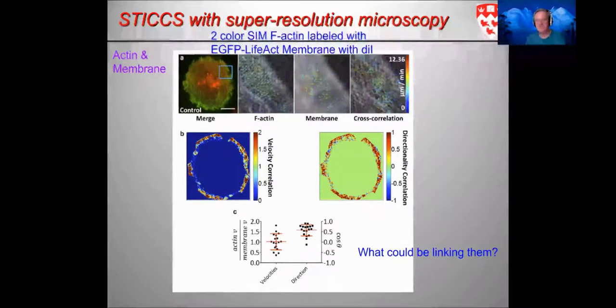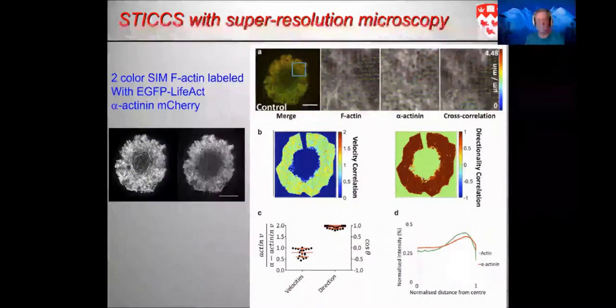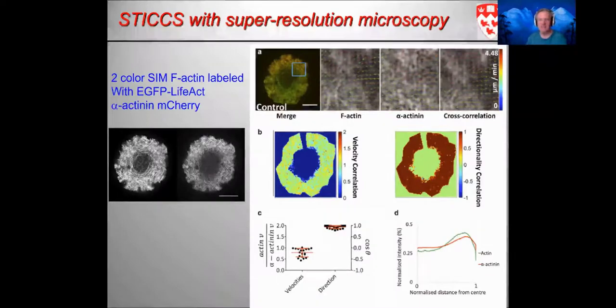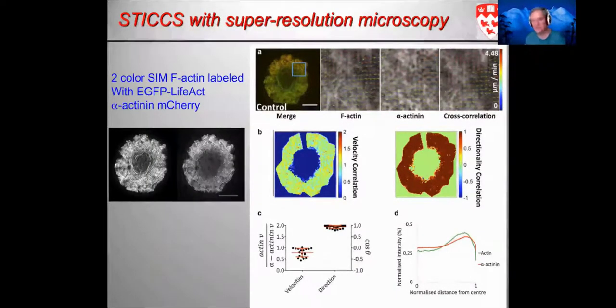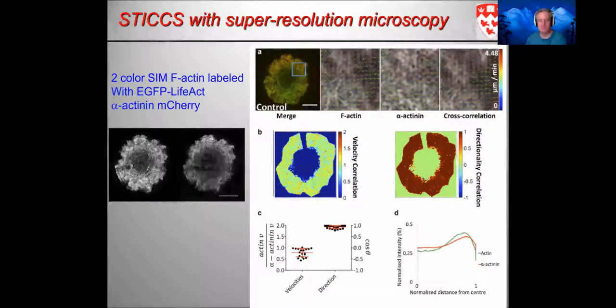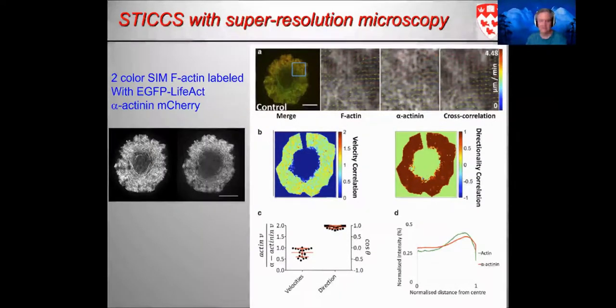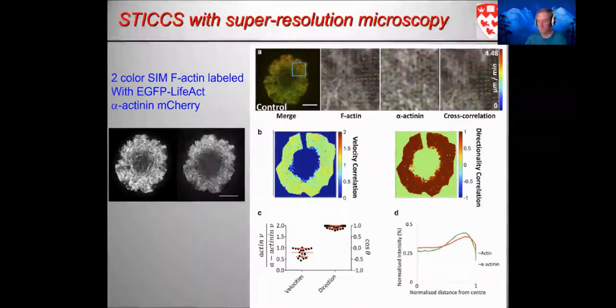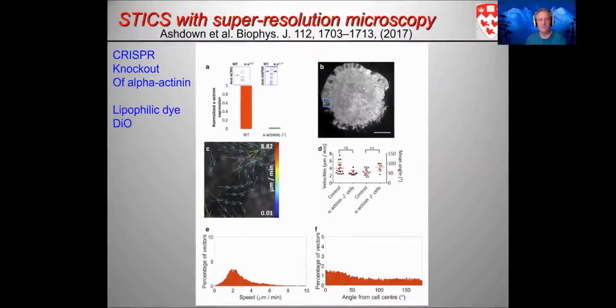We thought that alpha-actinin might be a candidate since alpha-actinin is known to bind to bundled actin, and it's known to link other molecules in a cell adhesion context. When we looked at F-actin and alpha-actinin in two-channel measurement and did the cross-correlation, clear retrograde coordinated motion between these two. That was not surprising. But what impact would it have on the membrane? For the CRISPR knockout of the alpha-actinin, once you knocked out the alpha-actinin, the coordination of the membrane DiII was lost at the periphery when the alpha-actinin was knocked out.